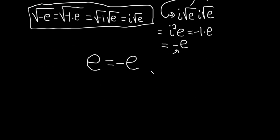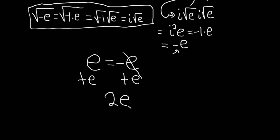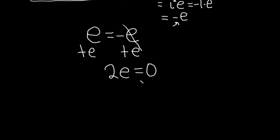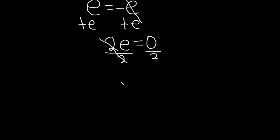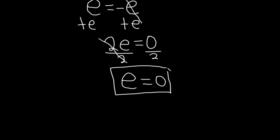So now what we can do is add e to both sides of this equation. These cancel: e plus e is 2e, and that's equal to 0. Then we can simply divide both sides by 2 — 2 is a positive number, there's no issue with the division. And so we've basically shown that e is equal to the number 0, which cannot be true.